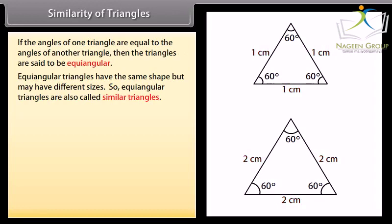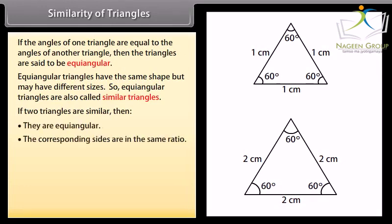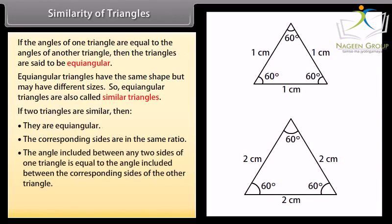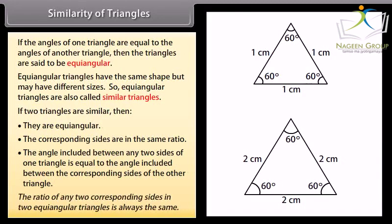If two triangles are similar, then they are equi-angular. The corresponding sides are in the same ratio. The angle included between any two sides of one triangle is equal to the angle included between the corresponding sides of the other triangle. The ratio of any two corresponding sides in two equi-angular triangles is always the same.